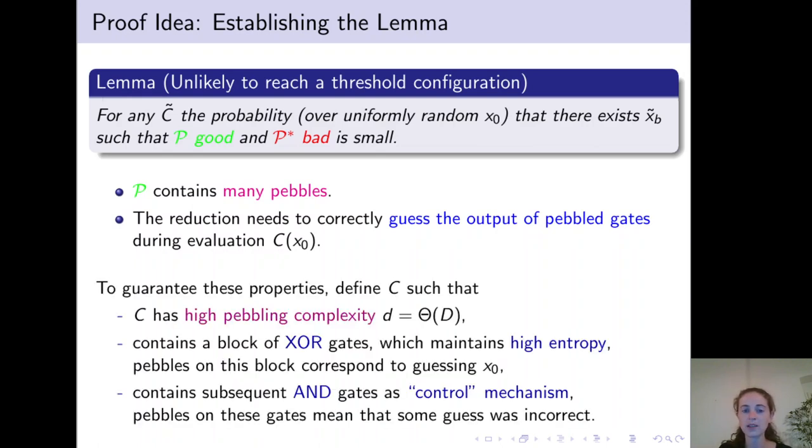To guarantee these properties, it is now crucial how to define the circuit C. First, C must have high pebbling complexity. In particular, at least D, our threshold. Furthermore,